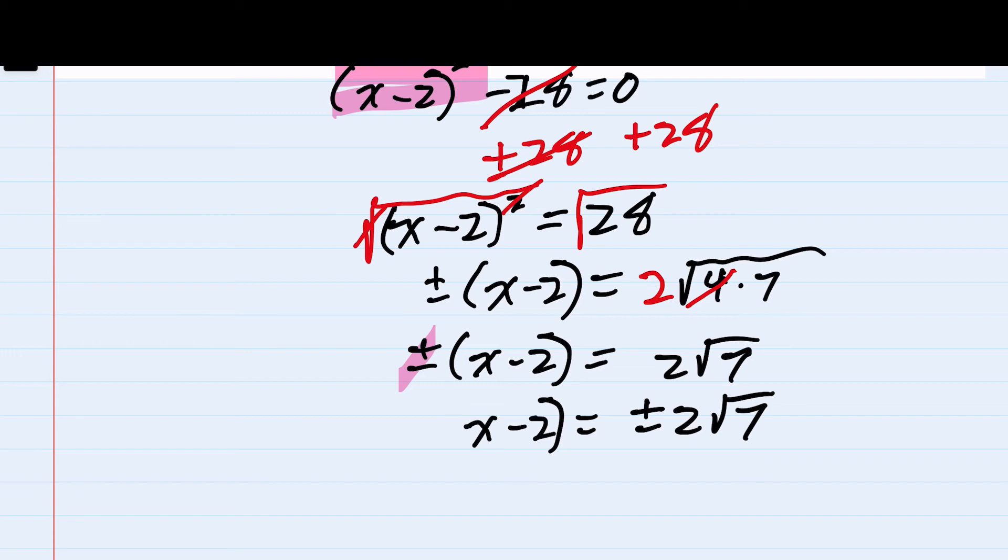And since we no longer need the parentheses, I can see that solving would just be adding the 2 to the other side of the equation, canceling on the left. I would have x equals the 2 that I just added over, plus or minus 2 square roots of 7.